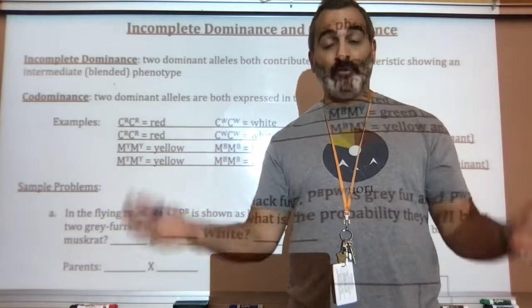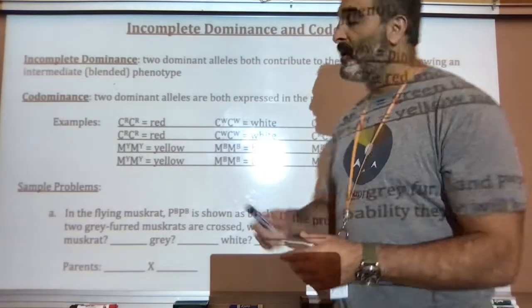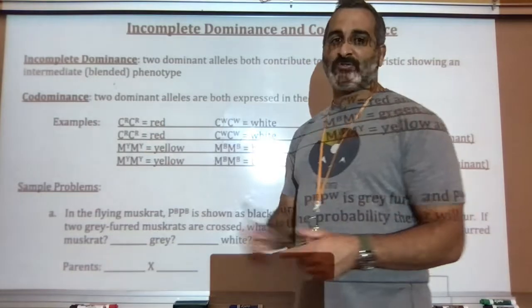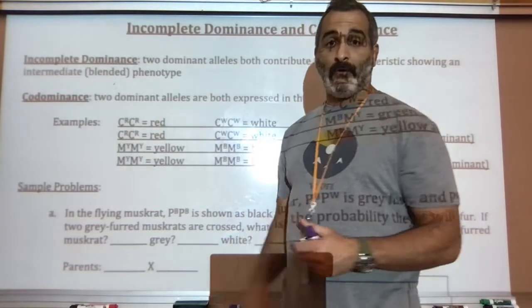So these are two types of alleles. Both of them are dominant. And they usually show them as what's called a superscript, a capital letter that comes above another letter.